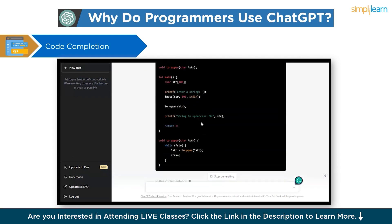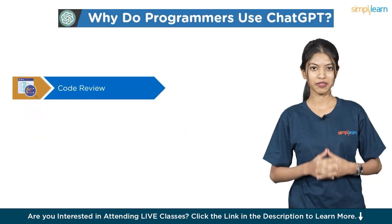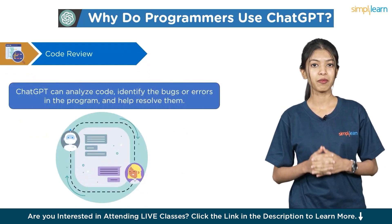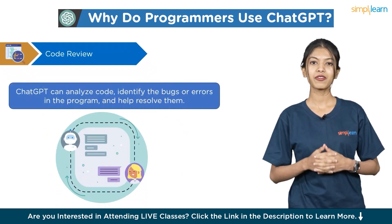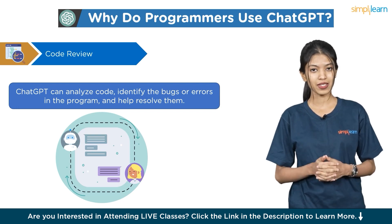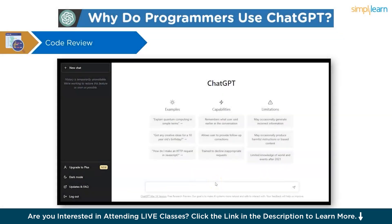Next is code review. ChatGPT can analyze code, identify bugs or errors in the program, and help resolve them. It allows developers to fix errors more quickly. Let's have a look at an example of code review — ChatGPT will review the code and identify any mistakes.